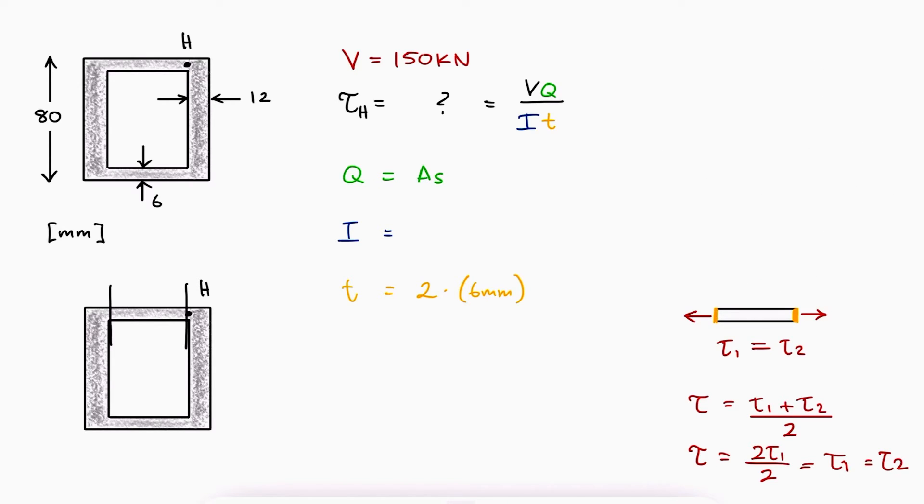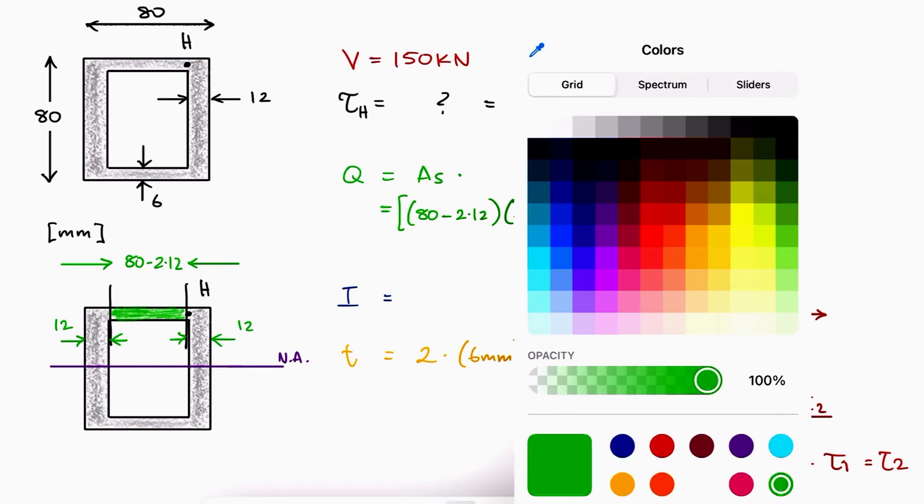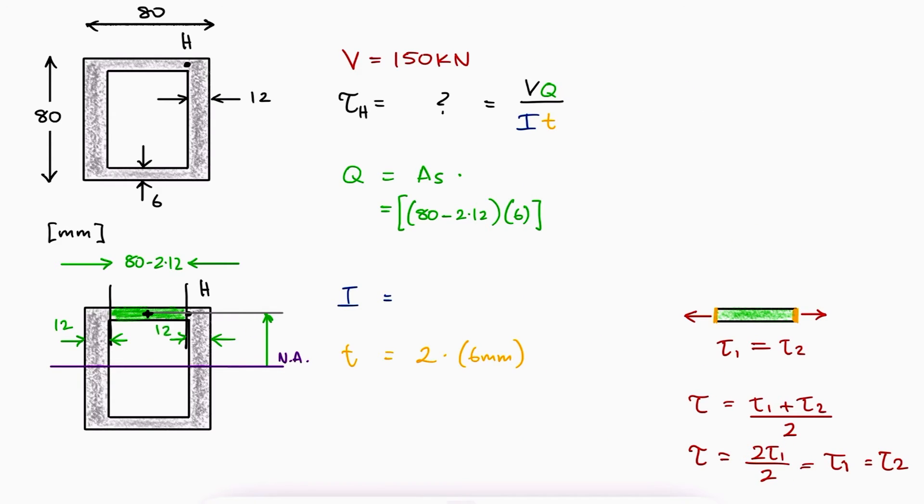The first moment of area will be the area of the removed section which has a base of 80 minus 2 times 12 and a height of 6. The distance from the neutral axis to the centroid of that shaded area would be half of 80 minus half of 6.